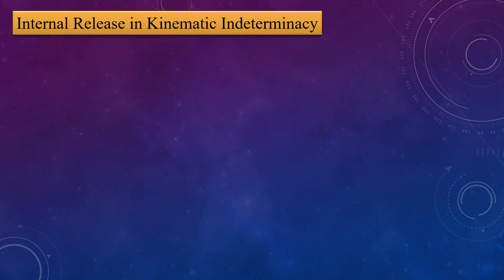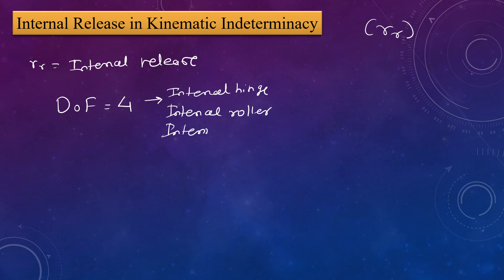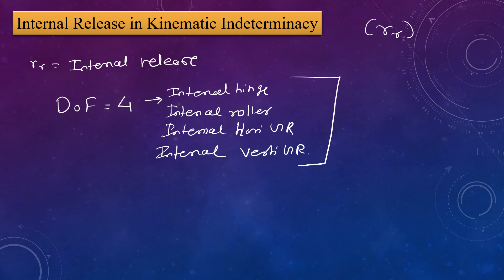In kinematic indeterminacy, internal release is represented by rr. The same conditions apply as seen in static indeterminacy. The value consists of two parts: degree of freedom and internal release. The degree of freedom is 4 for an internal hinge, 4 for an internal roller, and values also exist for internal horizontal and vertical guided rollers. You can use the degree of freedom alone to solve kinematic indeterminacy — this is the first method.